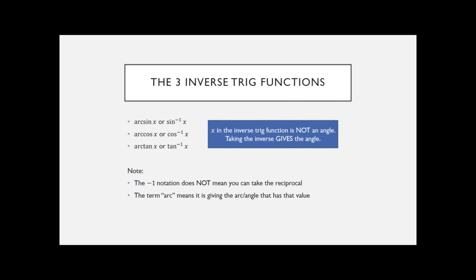We indicate the inverse trig functions by either 'arc' or with negative one as an exponent. I traditionally use 'arc,' so I say arc sine, arc cosine, arc tangent. But most calculators use the negative one symbol.